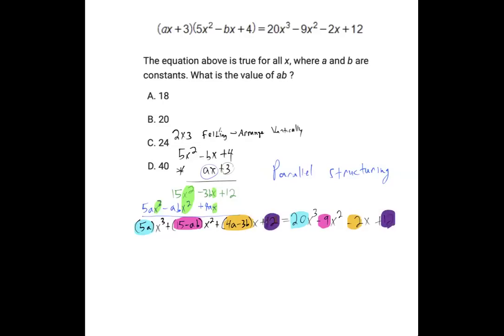So let's go ahead and start setting the corresponding parts equal. 5a equals 20, divide by 5, and we get 4.